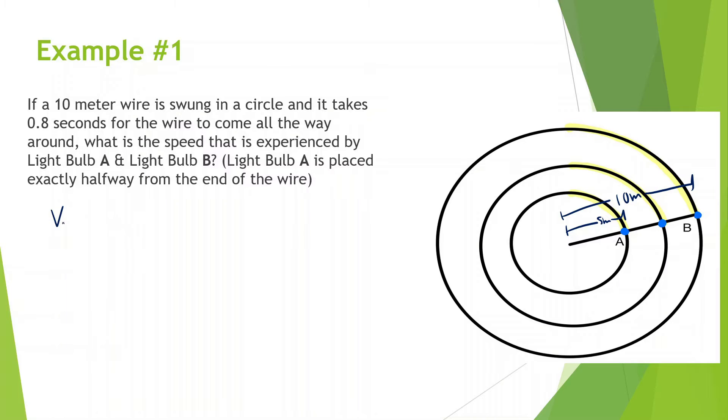Let's find the velocity of light bulb B. We know it's 2πr divided by T. So VB is going to be equal to 2πr. It's going to be 10 meters from where it's spinning, and it takes 0.8 seconds to go all the way around. So let's put that into our calculators: 2π(10) divided by 0.8, and we get 78.54 meters per second. That's how fast light bulb B is going.